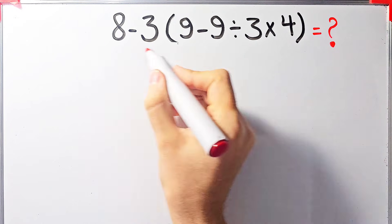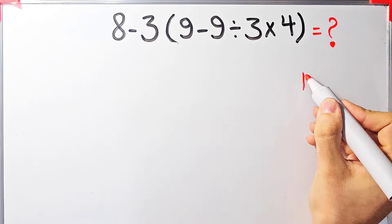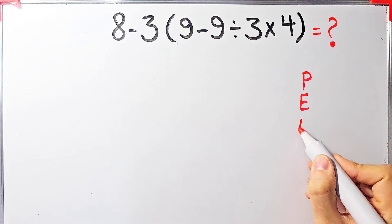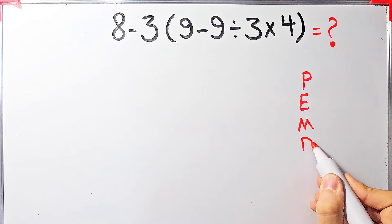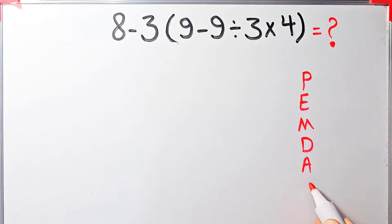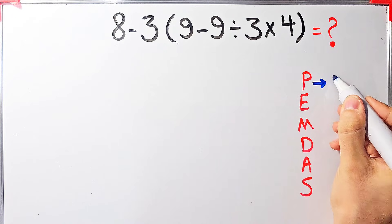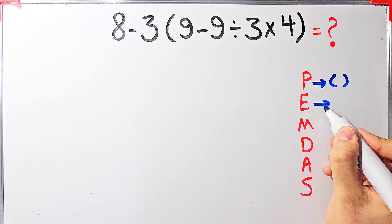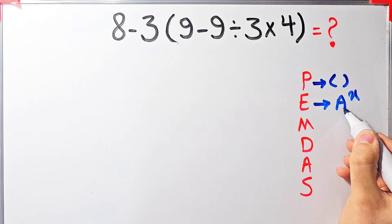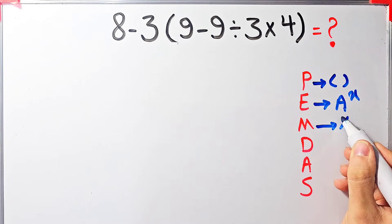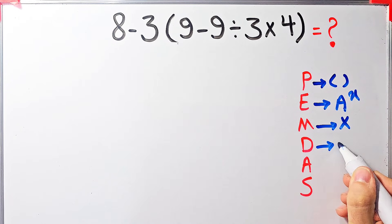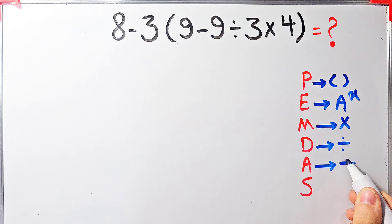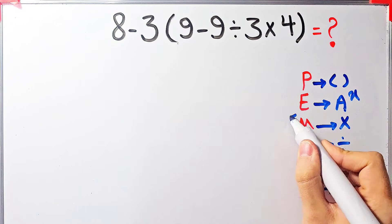Let's solve this question step by step together. To solve this question we need to follow the PEMDAS rule. PEMDAS shows the priority of mathematical operations, and if you don't pay attention to this rule you get the wrong answer. P stands for parenthesis, E for exponent, M for multiplication, D for division, A for addition, and S for subtraction.